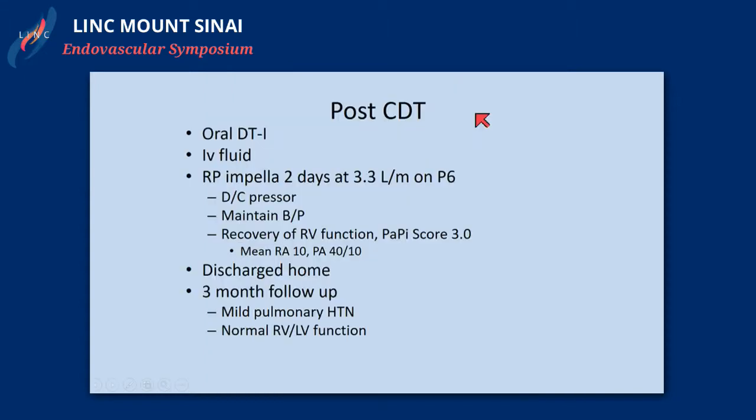The patient received oral thrombolytics and IV fluids, and the RP Impella was placed for about two days. Subsequently, we were able to take the patient off pressors and maintain blood pressure. Three to four days post-procedure showed an improved PAPI score, and the patient was discharged. Three-month follow-up showed recovery of the right ventricle.